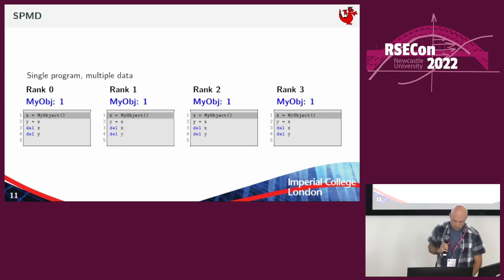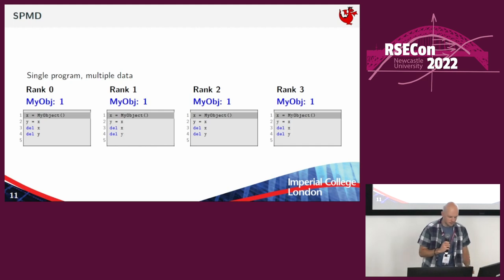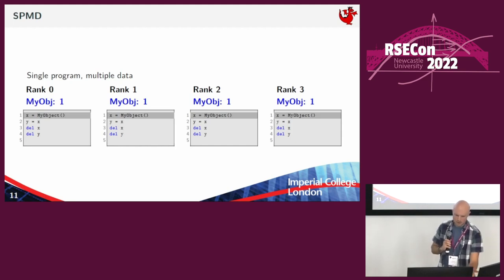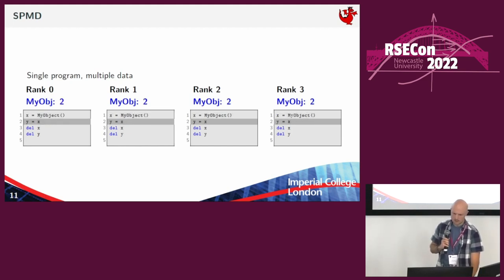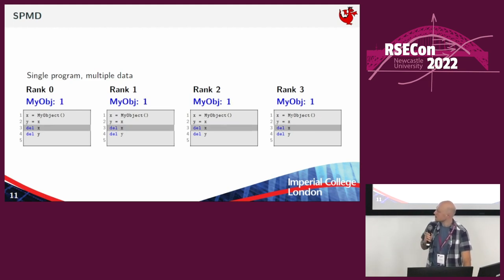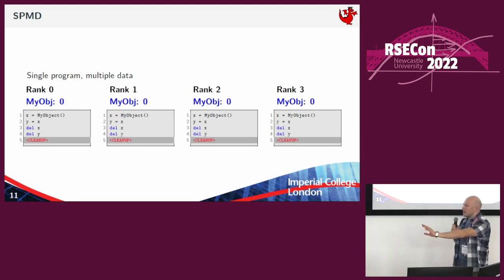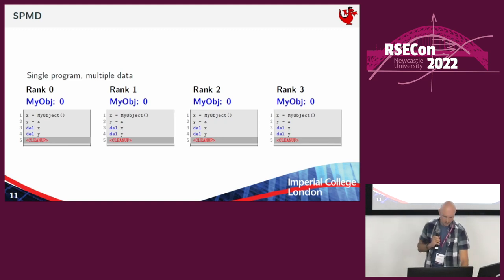Now let's run this on a four-core computer and see what happens. We're keeping track of the reference count above the code on each rank. We create a reference to our object X, then another reference Y, delete one reference, delete the other, and then importantly all four ranks are now going to clean up at the same time.